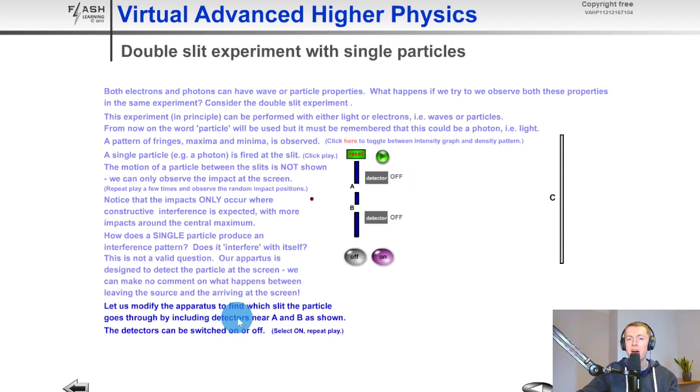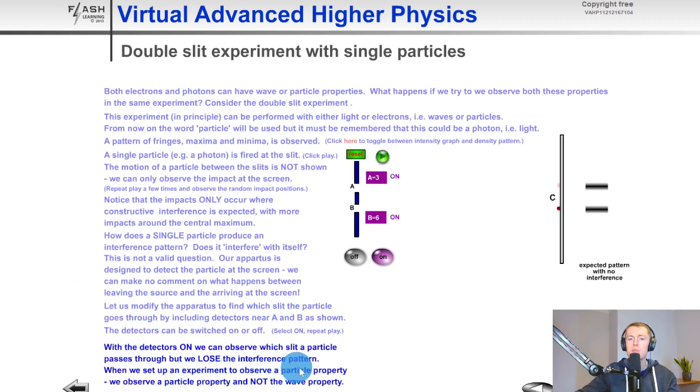Interestingly we could modify the apparatus to find which slit the particle goes through by including detectors near A and B. So here we have detectors A and B. If we turn these detectors on then you'll see that we can click play and it's going to add one to the counter for where the particle is passing through. But when we do this you'll notice that the particle is only appearing in one of two places. And this is because if you look here it says with the detectors on we can observe which slit a particle passes through but we lose the interference pattern. When we set up an experiment to observe a particle property we observe a particle property and not the wave property. So because we're trying to define the position of the particle at the slits then we lose the idea of the wave interference pattern which would happen over at the screen. And you'll see that we only end up with two fringes which is just straight on from where the slits are. So the particles are literally just passing straight through the slits in this case onto the screen.